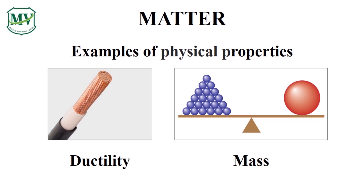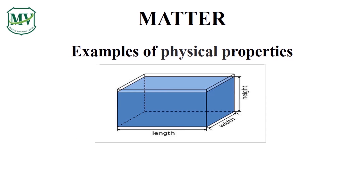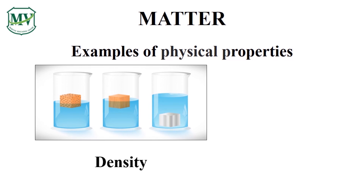Mass and volume are physical properties whose value depends on the quantity of matter present. Density is the mass of a substance per unit volume. Volume is the amount of space an object occupies that can be measured or observed without changing the chemical nature of the substance. Density expresses a relationship of mass to volume — the more mass an object contains in a given space, the more dense it is.